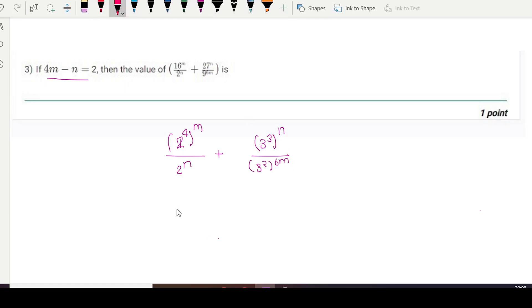So now moving forward, 4m minus n will go upward, plus 3. 3n minus 12n, so it will give 2 to the power 4m minus 2, plus 3 to the power, 3 common, n minus 4m.